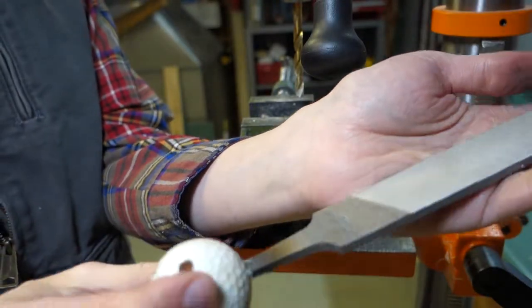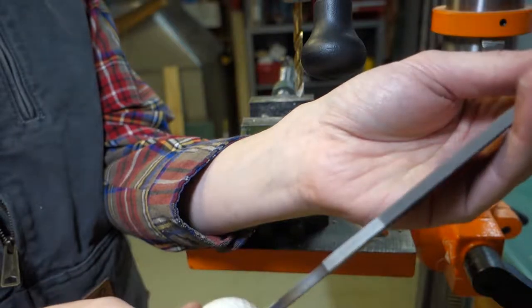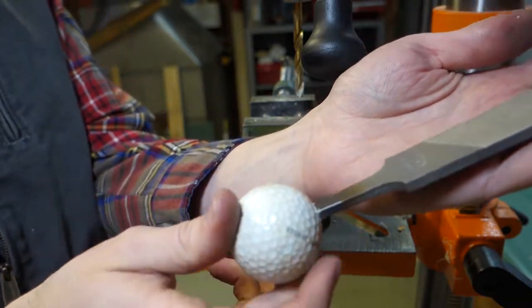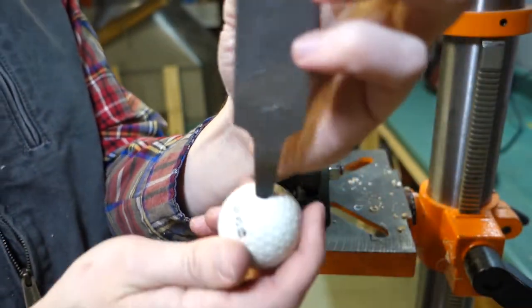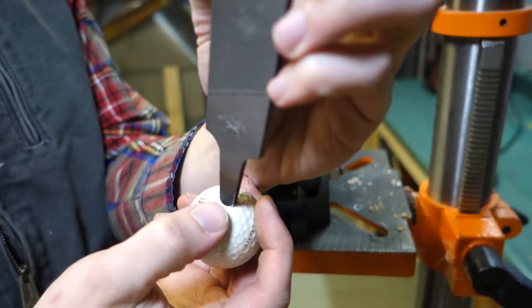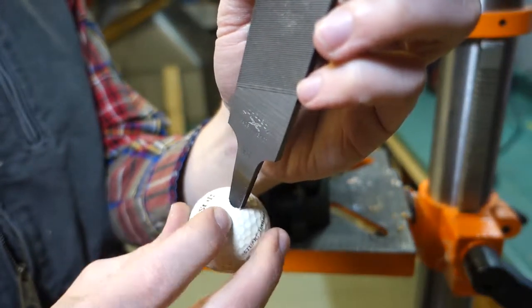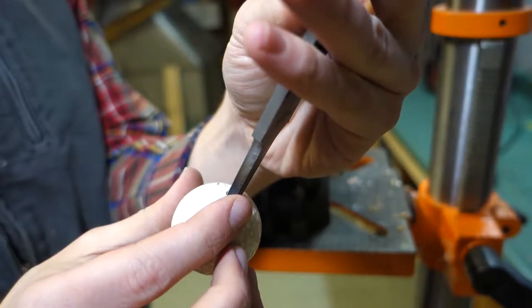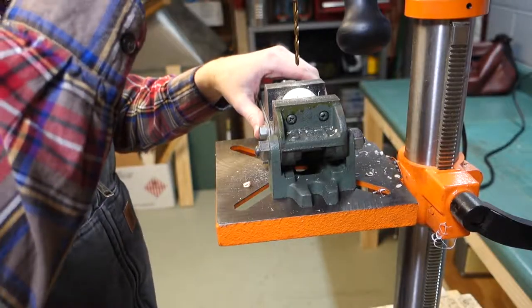And the more you put the handle in the file, the more it'll probably stretch the hole out at the top, and so it should be able to go deeper into the hole each time.